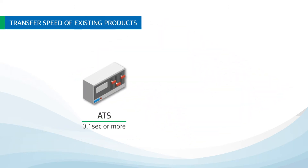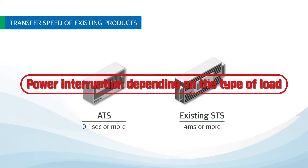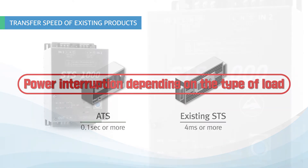ATS, an existing product, has a transfer speed of 0.1 seconds or more, and the existing STS has a transfer speed of 4 milliseconds or more. The transfer time of existing products may cause power interruption depending on the type of load, such as capacitive load or inductive load.